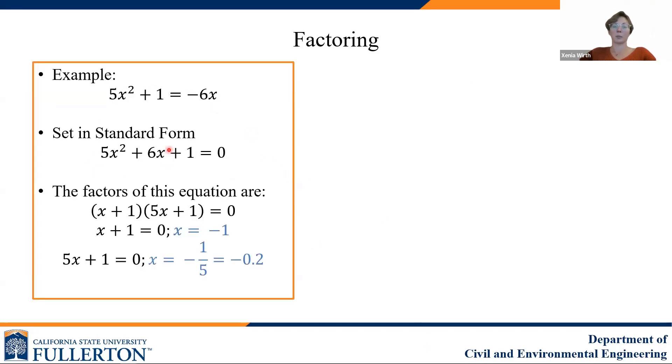Let's do our previous example again, except this time we're going to use factoring to solve. 5x squared plus 1 is equal to negative 6x. First, we have to set the equation in standard form, just like before. We want 0 on one side and all of our terms on the other. So we moved negative 6x over to the left. The two factors of this equation are x plus 1 and 5x plus 1. If I multiply these two expressions together by multiplying the x with each term and multiplying the 1 with each term, then I see that we will arrive at 5x squared plus 6x plus 1. If I set each of these linear equations equal to 0, I can find the roots of this polynomial. x plus 1 is equal to 0, which means x is equal to negative 1 is a solution to this equation. 5x plus 1 is equal to 0, which means x is equal to negative 1 over 5, or negative 0.2 is also a solution to this equation.